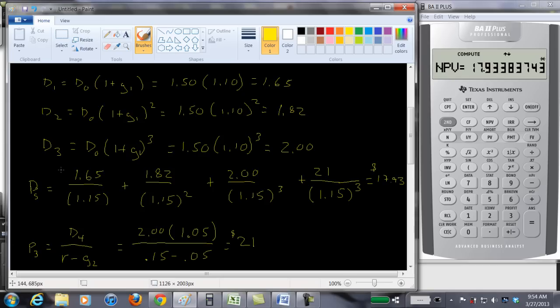And again, you can check this for yourself. You can find the present value of this, plus the present value of this, plus the present value of this, plus the present value of this, and you should find it equals $17.93. So if you have more than one growth rate, it's quite easy to do. It's a little more tedious, but you're going to have to do it in a couple of steps.